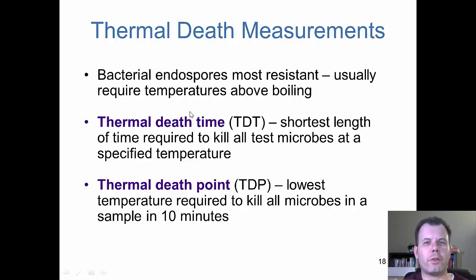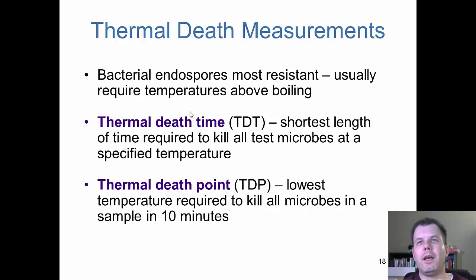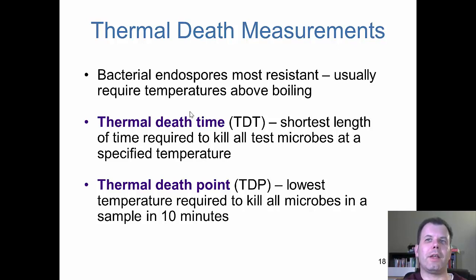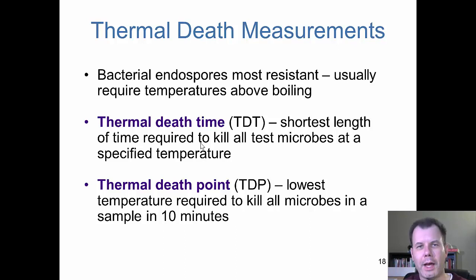This is something we're going to actually be doing in the lab. In the physical control lab, what we're going to actually be doing is boiling things for different amounts of time and looking to see how long it takes. The example of that is going to be the thermal death time. We're going to use the same temperature all the time and different amounts of time to see how long it takes to eliminate all the bacteria.